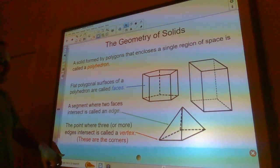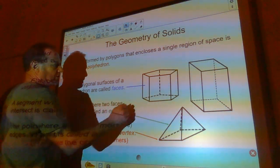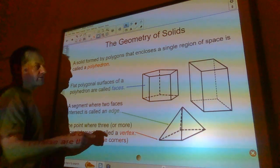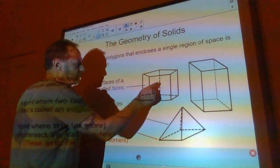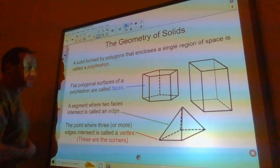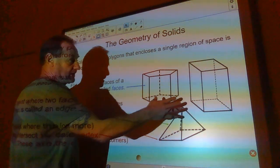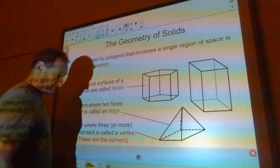So here's some polyhedrons. The flat polygonal surfaces of those are called faces. This here is a pentagonal prism. It has two bases and five lateral faces and so it has a total of seven faces. This box right here has six faces. This pyramid has five bases.